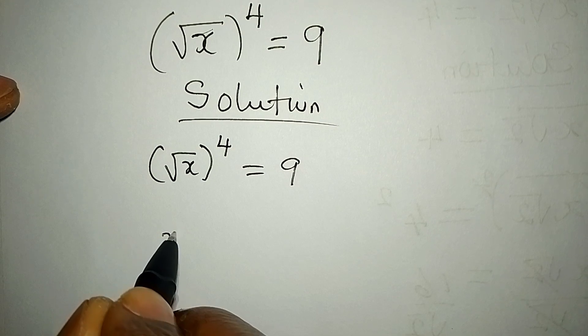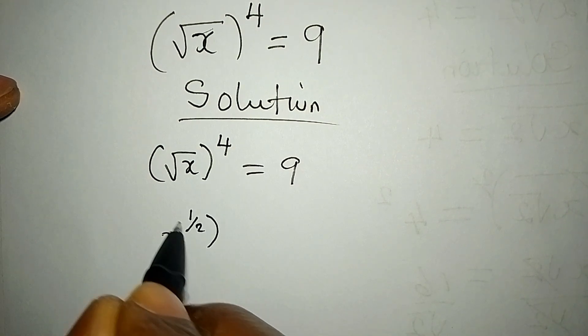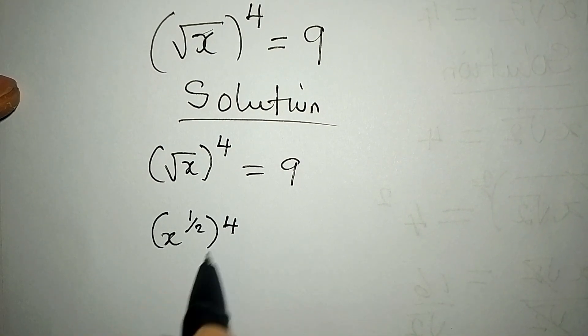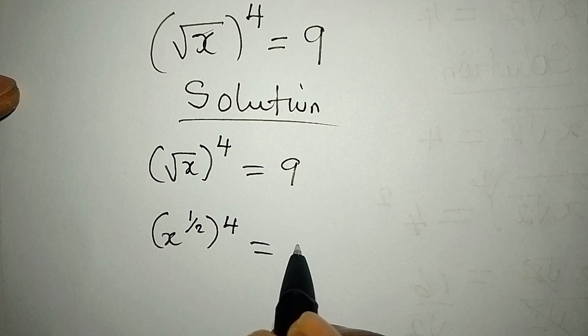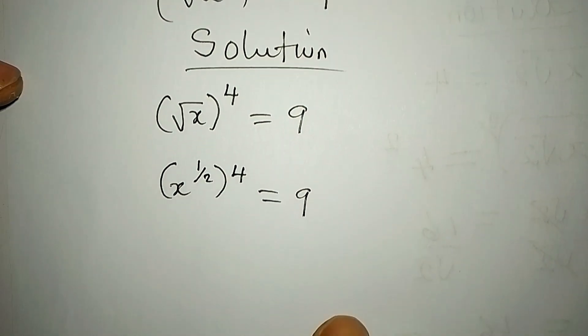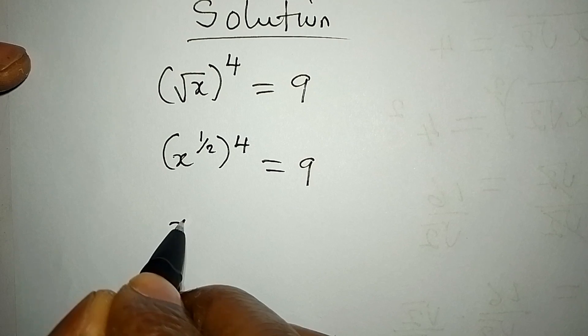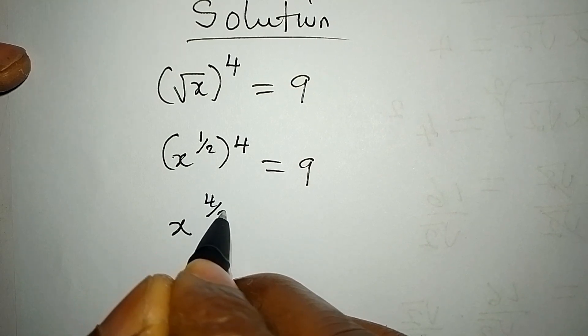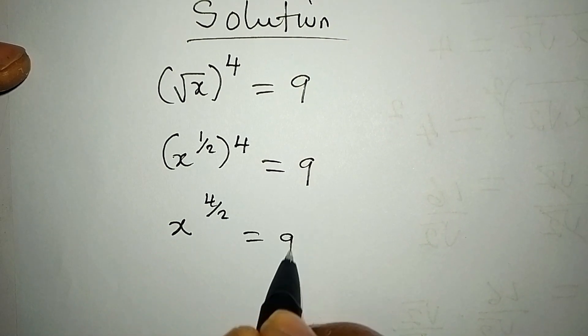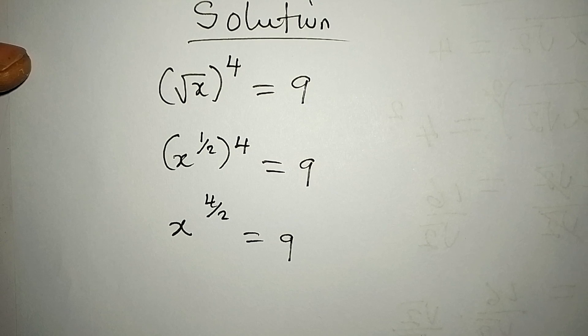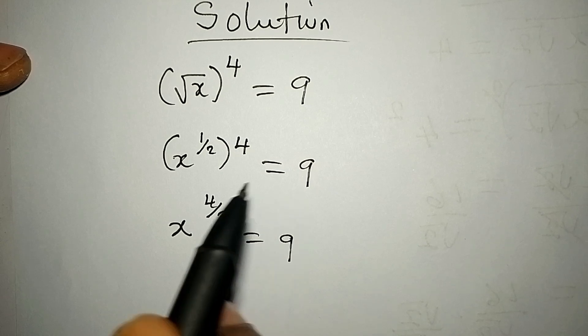So the four outside is there and is equal to nine. Now what again can we do? This is the same thing as x to the power of four over two and is equal to nine, because every time you have a bracket like this separating two powers, you can multiply the powers.